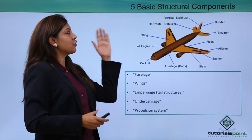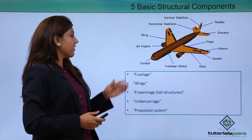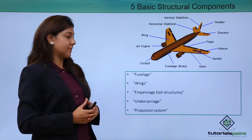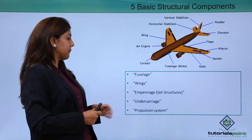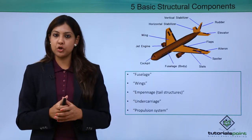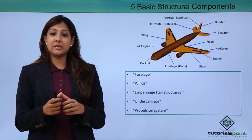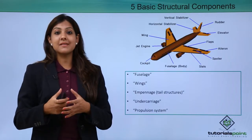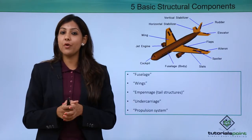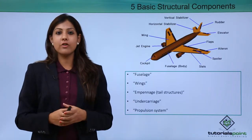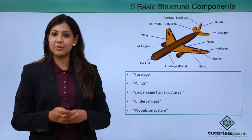Coming to the five basic structural components of the exterior parts of the aircraft: we have the fuselage, which is the body; we have wings of different kinds; we have the empennage, which is the tail structure; we have the undercarriage, which is the belly of the aircraft where cargo or pets are kept; and we have the propulsion system, which provides the drive or energy for the aircraft.